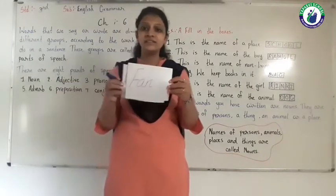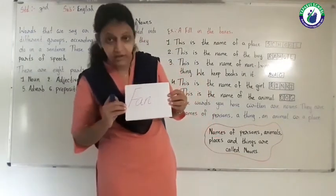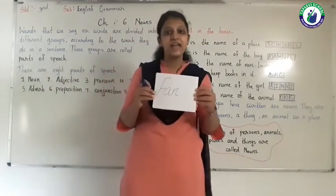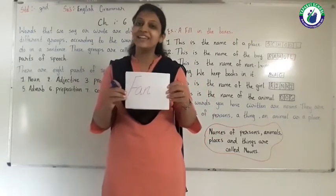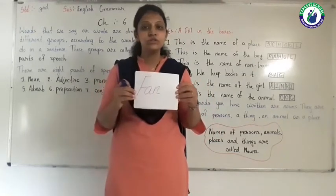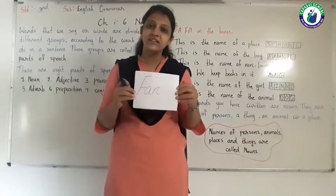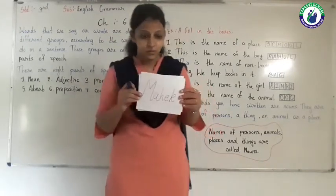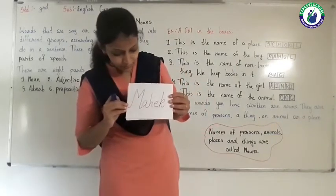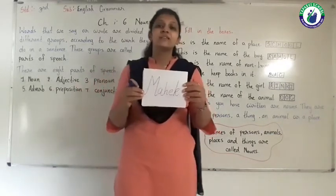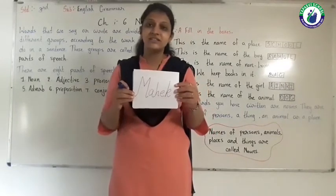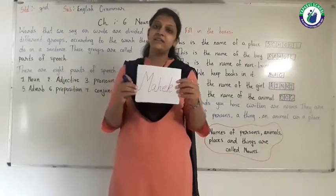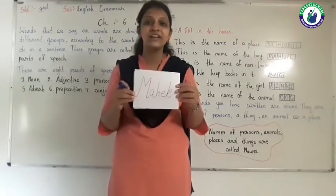Now let's see — fan. Fan we have to include it in thing. And also the word fan is called a noun. Next word — which word is given? Maheg. So the word Maheg is the name of a person. Ultimately, name of a person we can call a noun.